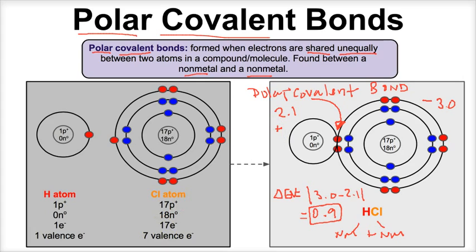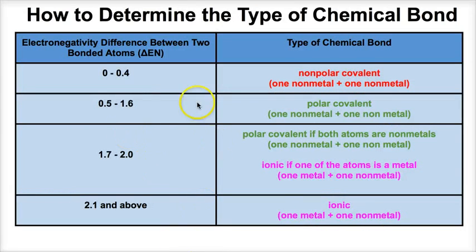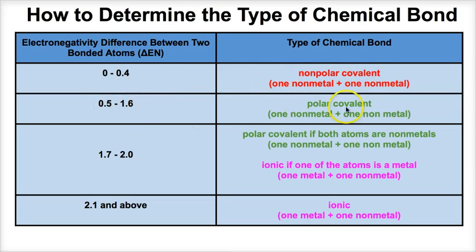So in a polar covalent bond, electrons are shared unequally between atoms, resulting in a positive side and a negative side of that molecule. Let's take a look at a few examples using the electronegativity chart. If the electronegativity difference between two atoms is 0 to 0.4, it's nonpolar covalent. From 0.5 to 1.6, it will be polar covalent, and so on. Let's apply this to a few example problems.